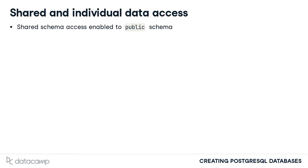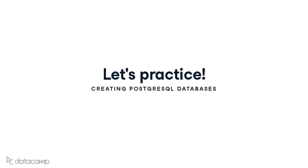With such a setup, the family group can be given access to all tables in the public schema, and each family member could then have a schema of their own for maintaining their individual financial data. It should be clear by now that hierarchical privileges can enable some rather sophisticated database access configurations. Let's take this opportunity to practice what we just learned.